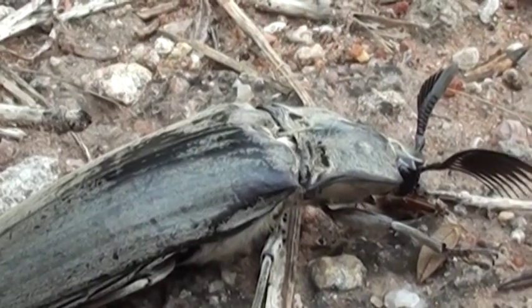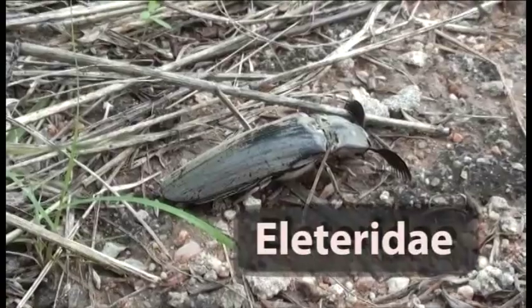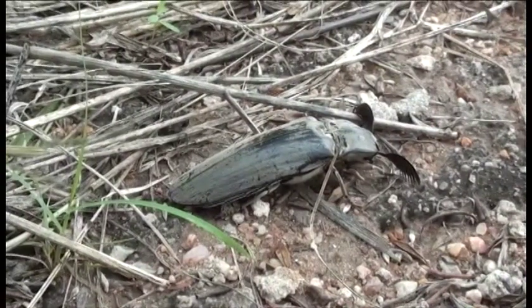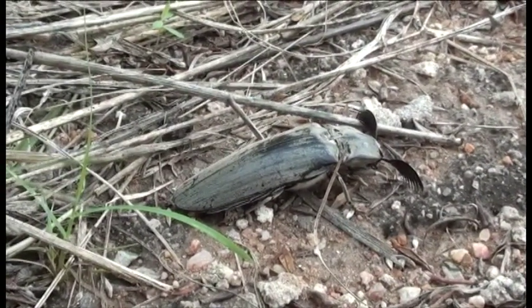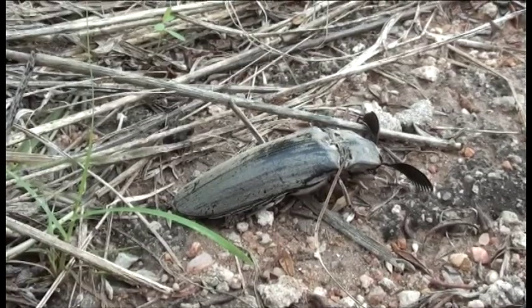The click beetles of the family Elateridae are a cosmopolitan group that includes more than 9,300 species worldwide. They're inconspicuous herbivores that are usually quite small, although some, like this species from northern Namibia, can get to be quite large.